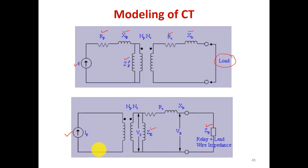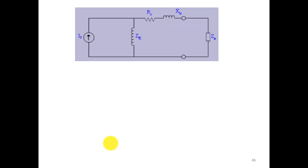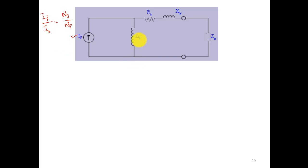This is the final simplified model after transferring the primary side equivalent circuit to the secondary side. The primary current Ip is referred to the secondary side as Is, where Ip/Is = Ns/Np. Ze is the exciting impedance referred to the secondary side. Rs is the secondary side resistance, Xls is the leakage reactance, and Zb is the burden — the relay plus lead wire impedance.